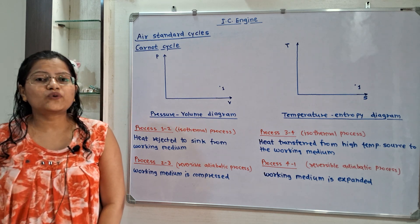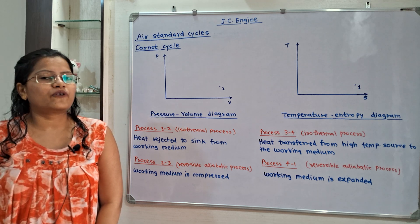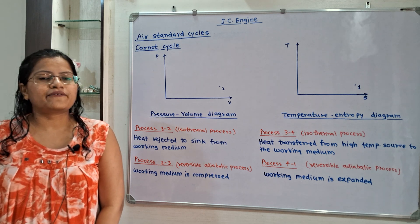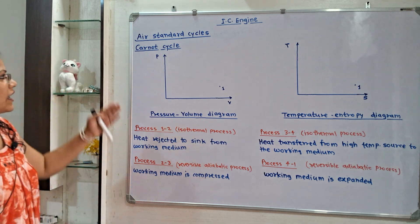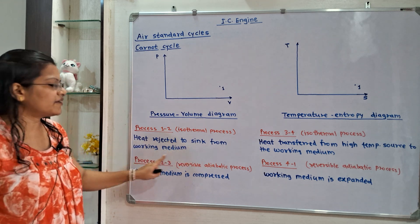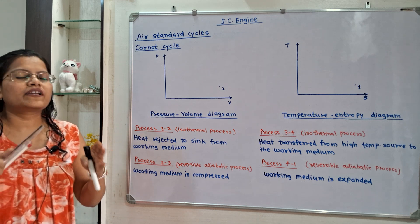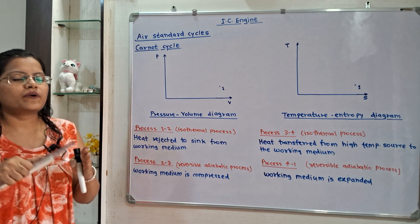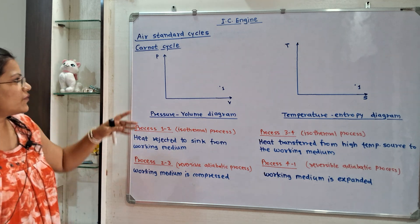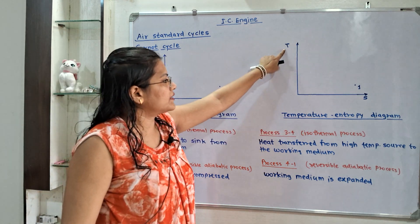Let us understand how to draw pressure-volume and temperature-entropy diagrams for the air standard cycles. In these cycles, air is used as a working medium. We will first take the Carnot cycle. We will draw the PV and TS diagrams starting with process 1 to 2, where heat is rejected to the sink from the working medium, which is always at a lower temperature.